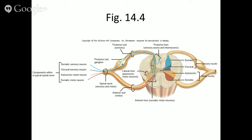We've split the spinal cord in half here and we're looking straight down from a superior view. You see these roots that seem to merge at a point. All of your spinal nerves — there are 31 pairs of spinal nerves in your back — are all what we call mixed nerves. They're mixed nerves because they contain both sensory and motor axons. A spinal nerve doesn't just carry sensory information and doesn't just carry motor information — it actually carries both.